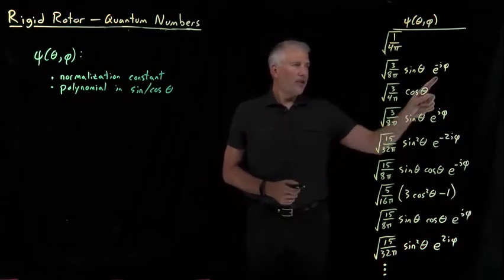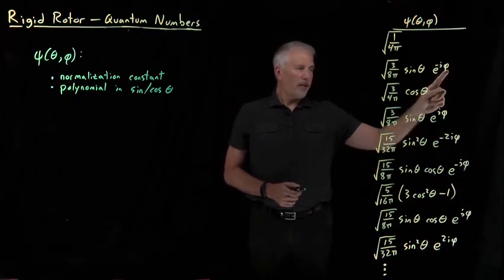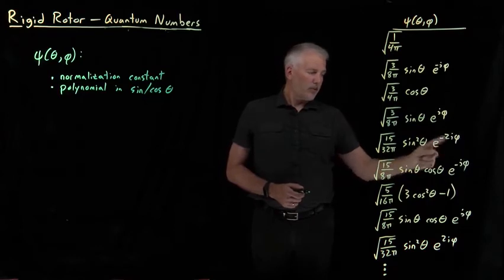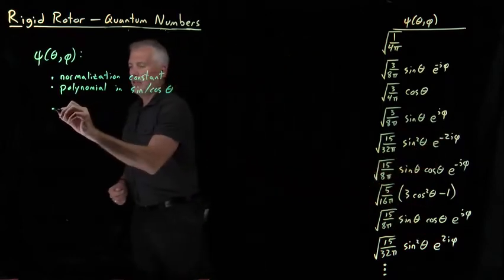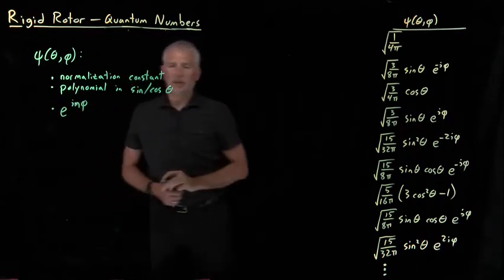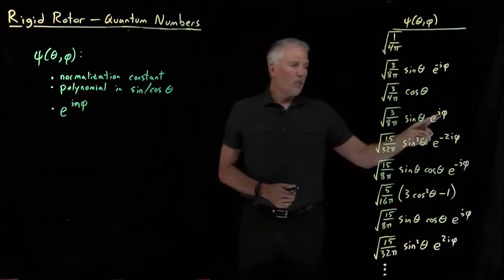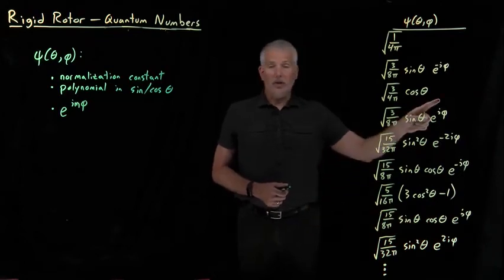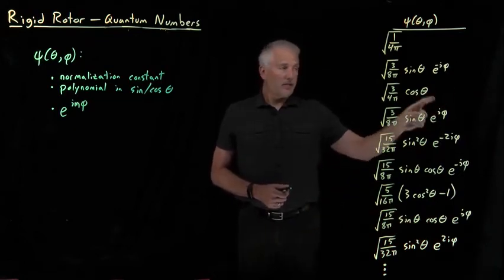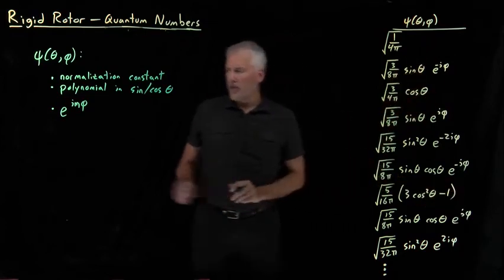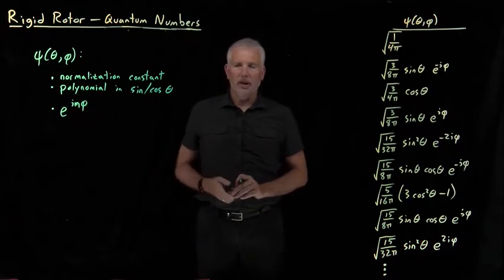The phi dependence always shows up in the exponential. We have e to the i phi with a plus or negative sign, or e to the 2i phi with a plus or minus sign. So in general, there's e to the i times phi times some small integer — that integer might be 1, negative 1, negative 2, positive 2, or even 0. E to the 0 phi gives us the phi dependence for some terms. In general, we always have e to the i times some integer times phi. Those are the characteristics of these wave functions.